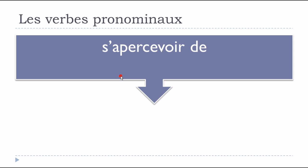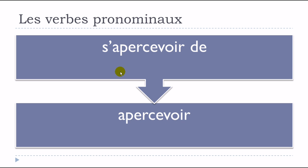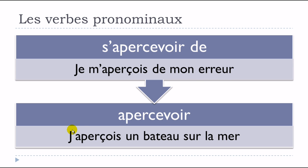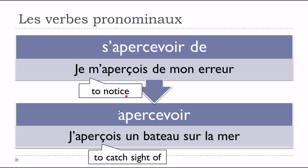To illustrate: s'apercevoir de versus apercevoir. Je m'aperçois de mon erreur — I notice my mistake. And j'aperçois un bateau sur la mer — I catch sight of a boat on the sea. As you can see, they look the same — apercevoir and s'apercevoir — but the meaning is really very different.